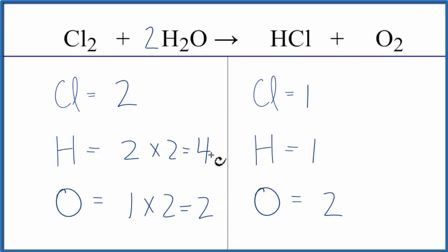We have one hydrogen here, four here. We'll put a four in front of the HCl. One times four. That gives us four. Those are balanced.